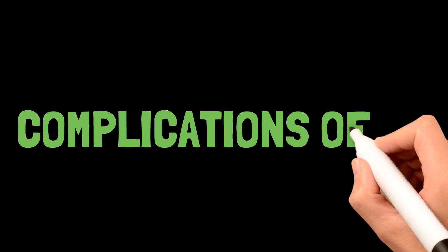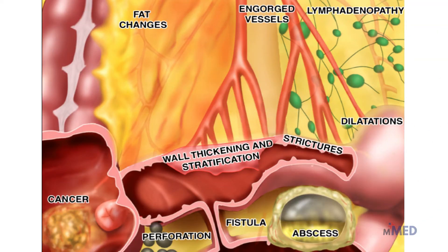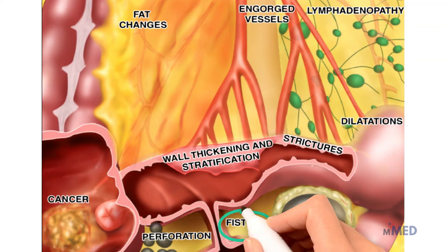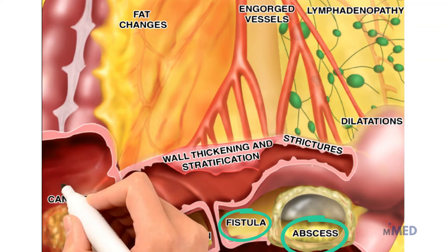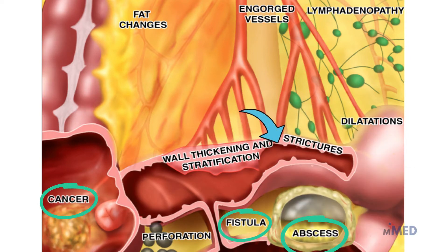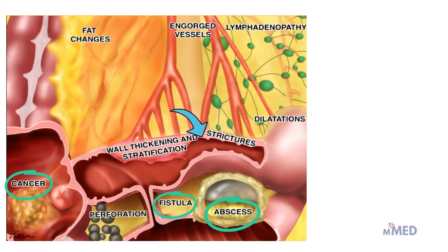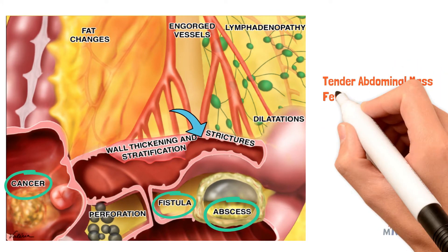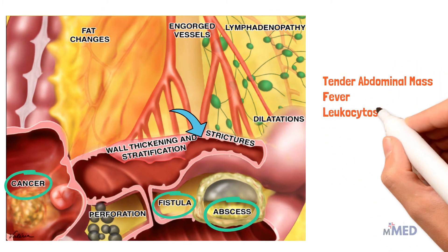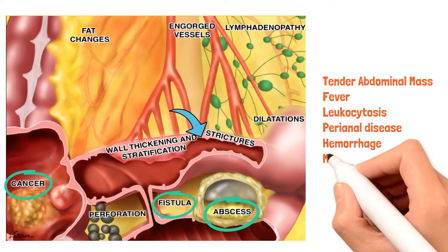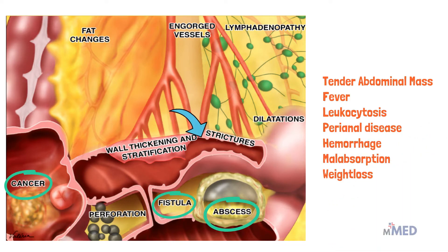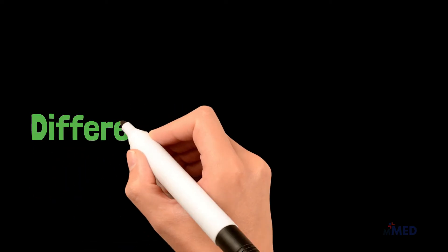To summarize the complications of Crohn's disease: we can see abscesses, fistulas, and colonic cancer. When the entire bowel wall is swollen or inflamed, it can narrow the lumen, appearing as fibrotic strictures. All of these complications can lead to the patient presenting with tender abdominal mass, fever, leukocytosis, perianal disease, hemorrhage, malabsorption, and weight loss.